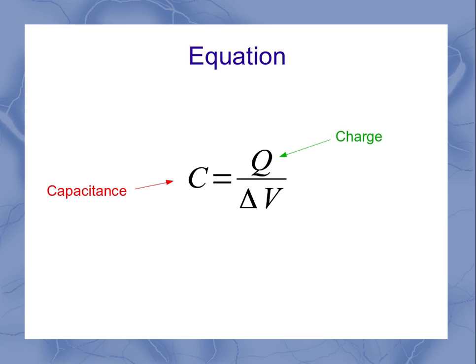Q is our charge, and our delta V is our voltage, or our potential difference across that particular capacitor.